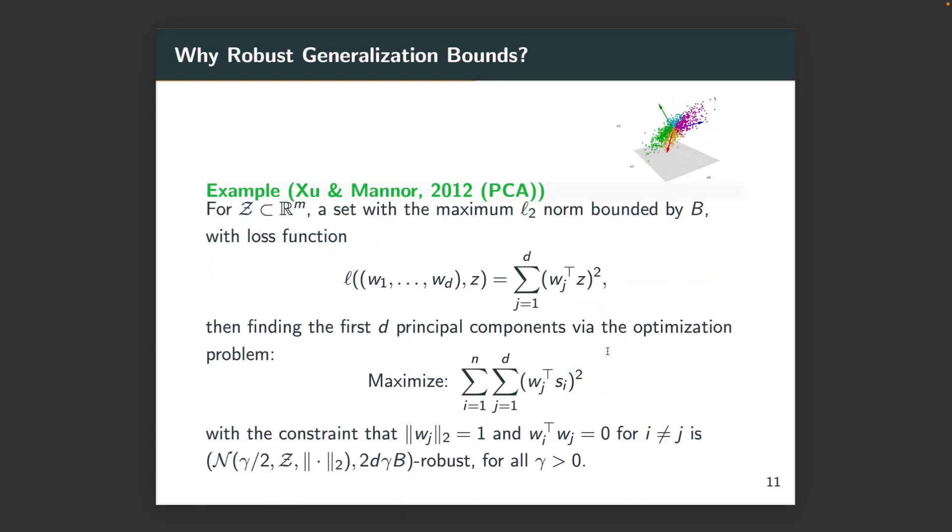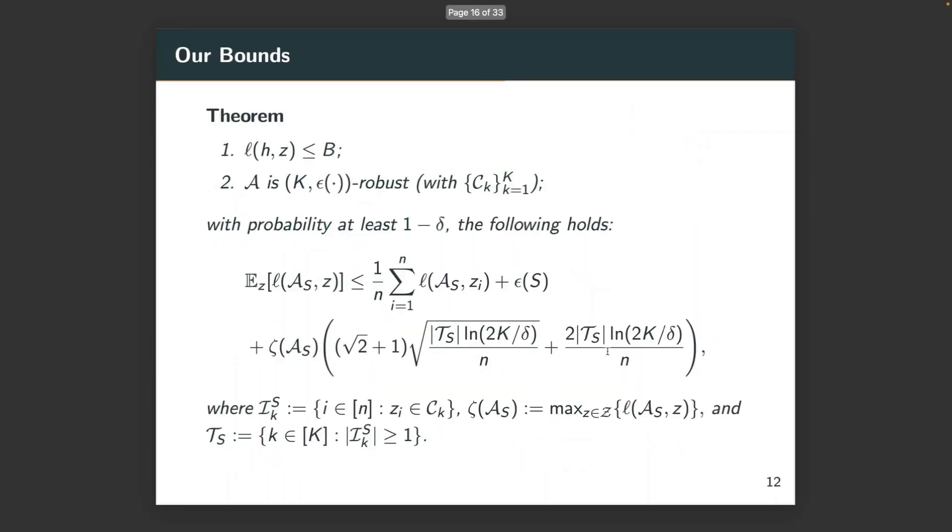The other example is PCA, which is trying to find the first D principal components via the following optimization. Again, we can see that K is the covering number of space, which can be quite large if the dimension is very high.